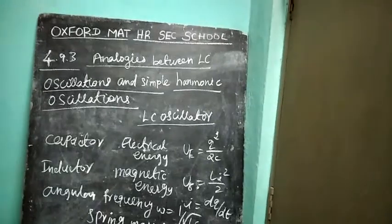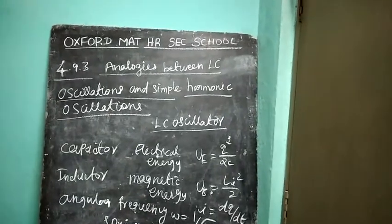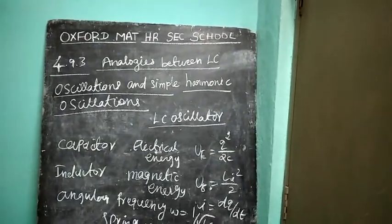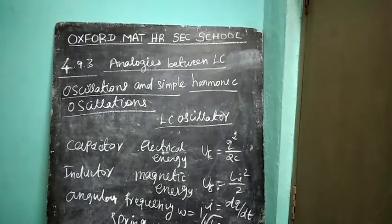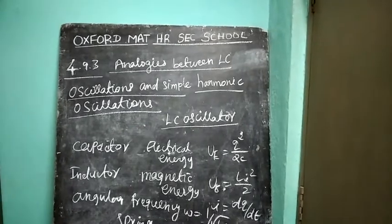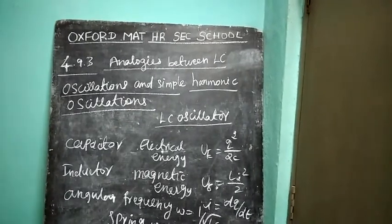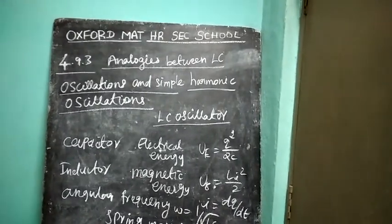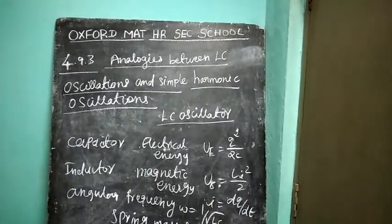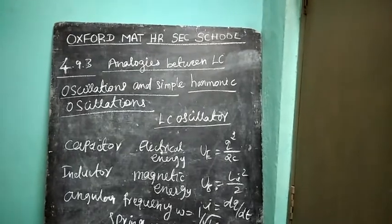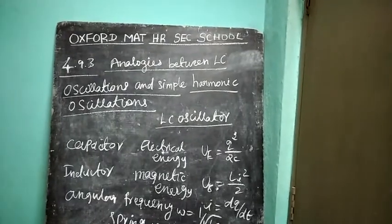I am going to teach 12th standard physics, lesson number 4, standard number 4.9.3: Analogies between LC oscillations and simple harmonic oscillations.